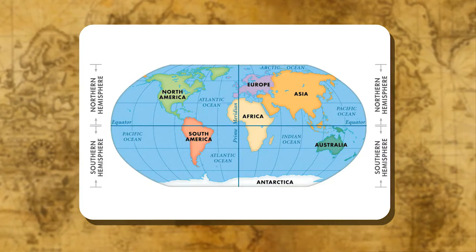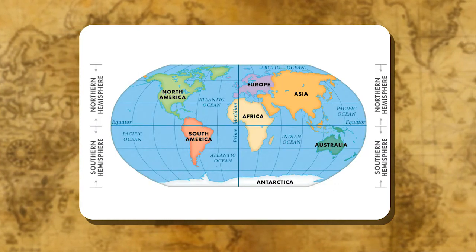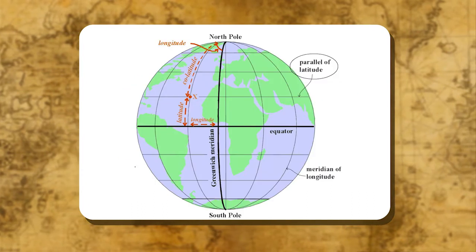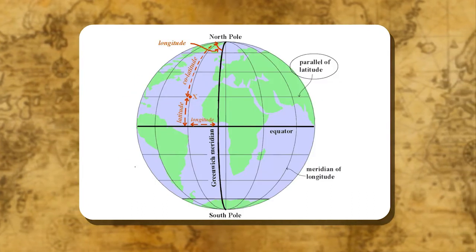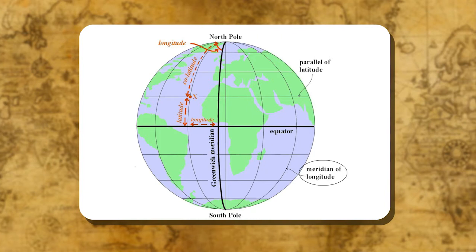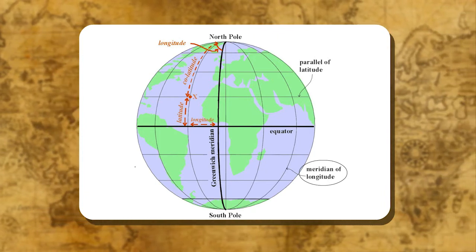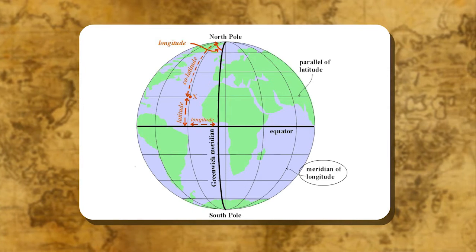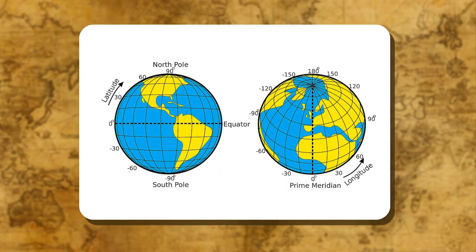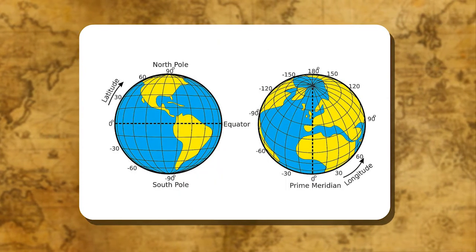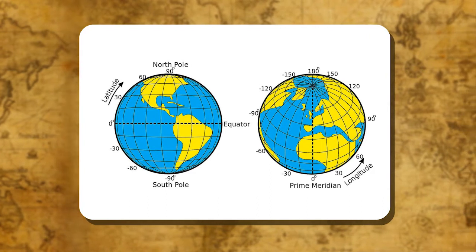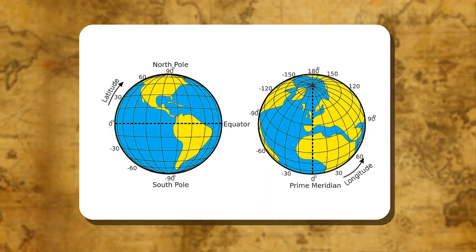All the lines running parallel to the equator are called parallels of latitude and all the circles converging at the north and south pole are called meridians of longitude. The positions of all the objects on the earth can be located with reference to these lines of latitudes and longitudes.